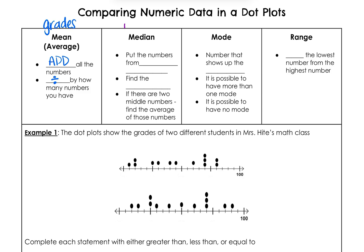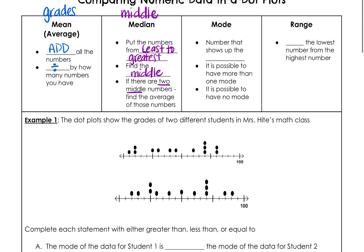Median is our favorite — that is the middle. We put the numbers from least to greatest and then find the middle value. Sometimes there will be two numbers in the middle, and if so, we add them and divide by two.